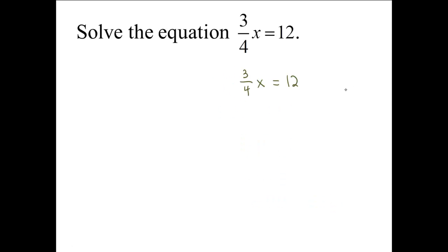Another way to solve the same equation when a fraction is multiplied to the variable is to multiply both sides of this equation by the reciprocal of this fraction. Reciprocal is 4 thirds. So we will multiply both sides of this equation by 4 thirds.